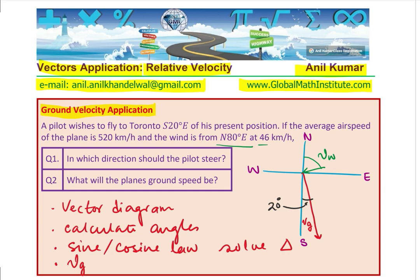What we need to find is the direction in which the pilot should steer. To find that, you need to complete this parallelogram. The pilot needs to steer in this direction — that is where the plane needs to be steered. That is the angle you need to find. Clearly, it is more than 20 degrees. Let's call this angle theta. The total angle from south will be 20 plus theta.